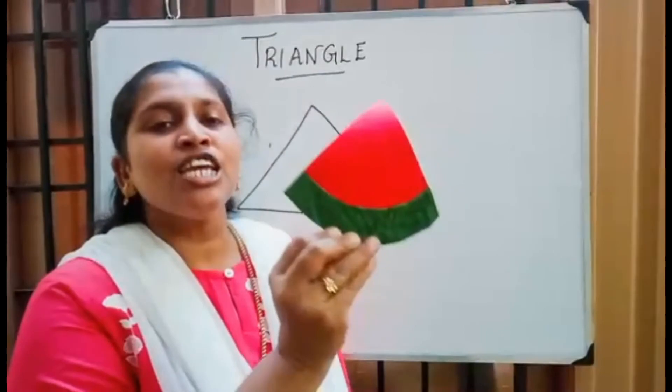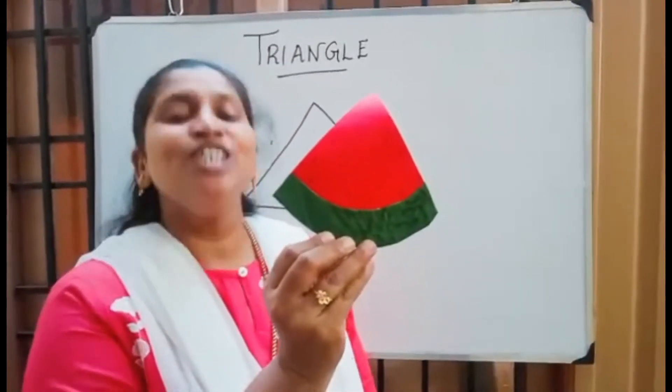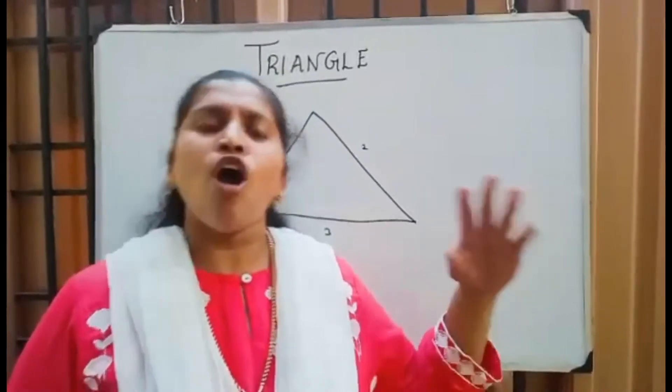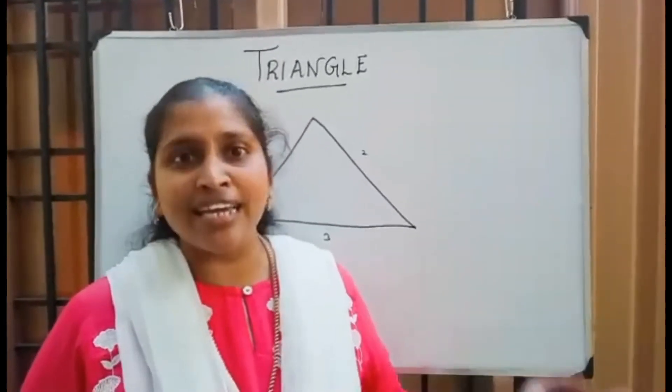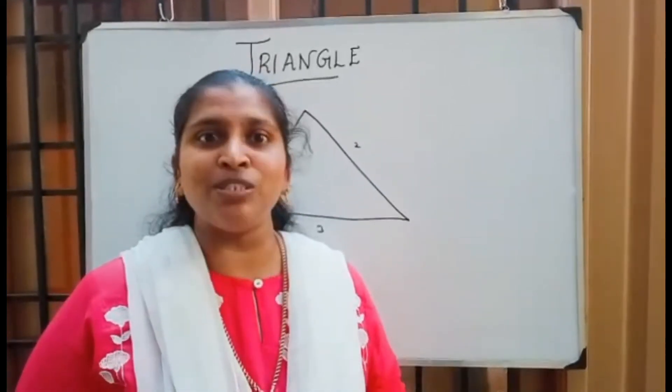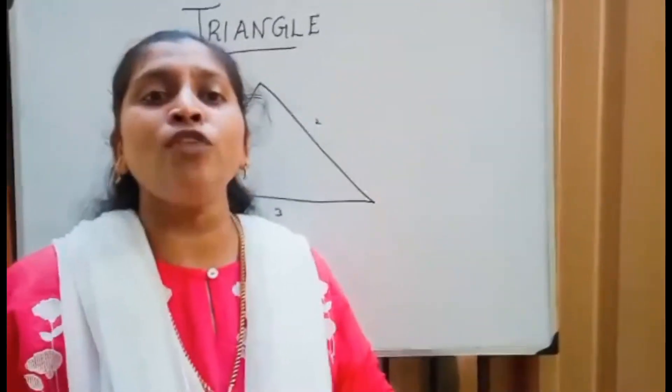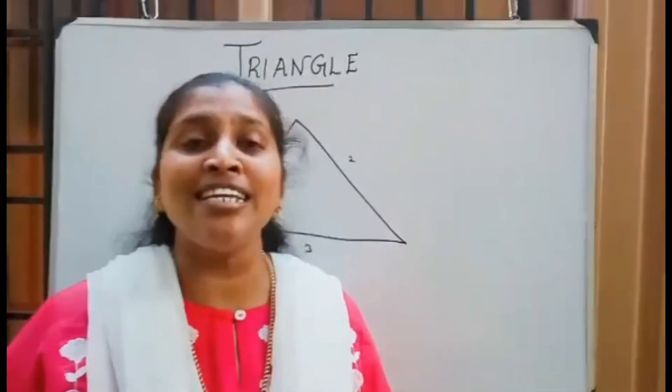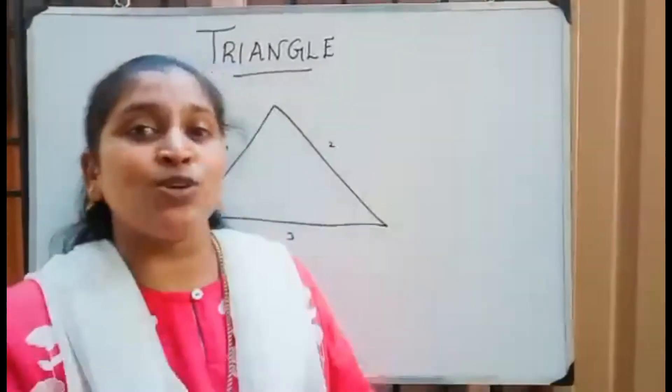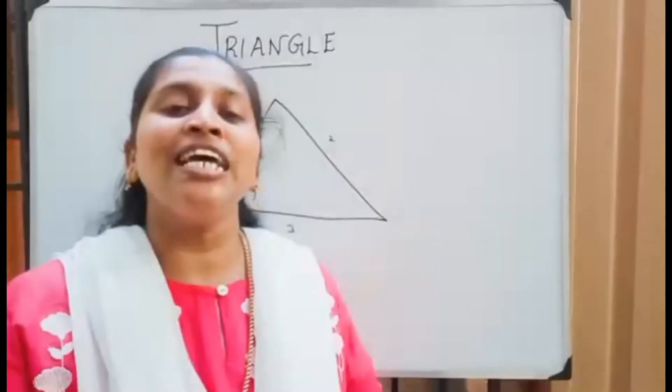When you see the roof of a tent or a roof of a hat, it will be in triangle shape. When you eat ice cream, the ice cream cone will be a triangle in shape. When you cut the pizza into halves, it will be in triangle shape.